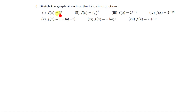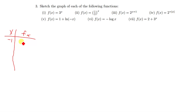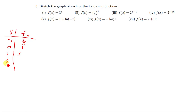When you are sketching such functions, the most important thing we need to utilize is a table of values. We have x on this side and f of x on this side. When we put negative one, we get one over three, because three raised to the power of negative one is one over three. When we put zero, three raised to power zero is one. When we put one, three raised to power one is three. When we put two, three raised to power two gives you nine.